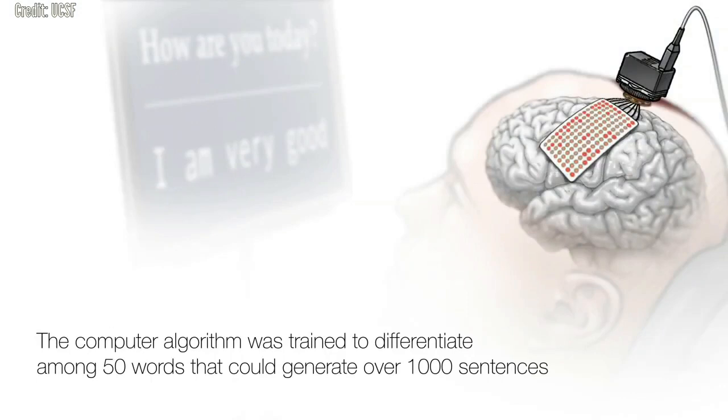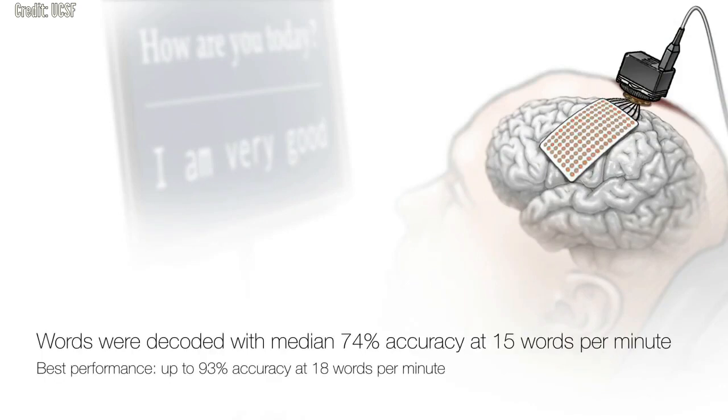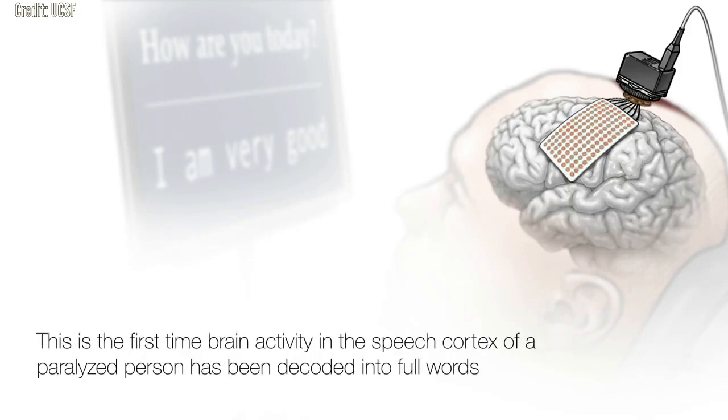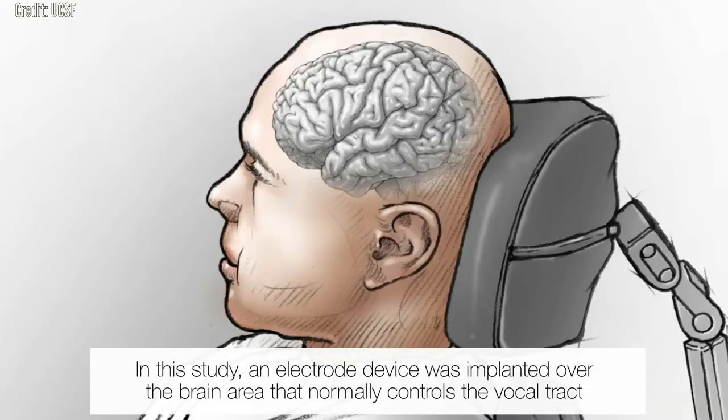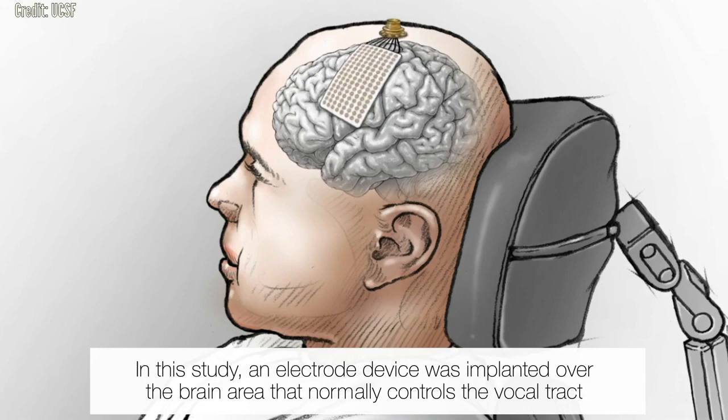Previously, Chang and colleagues in the UCSF Weill Institute for Neurosciences mapped the cortical activity patterns associated with vocal tract movements that produce each consonant and vowel. To translate those findings into speech recognition of full words, Chang's team has developed new methods for real-time decoding of those patterns and statistical language models to improve accuracy.